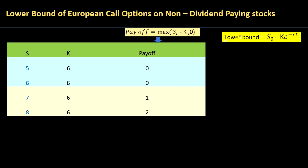The lower bound of a call option — in other words, the lowest value a call option can take — can be proved as follows. If at maturity the price of the underlying is less than the strike, then the lower bound is zero. If not, the lower bound of a call option is the spot price of the underlying minus the strike price discounted at the risk-free interest rate. This will be the lower bound of a call option.